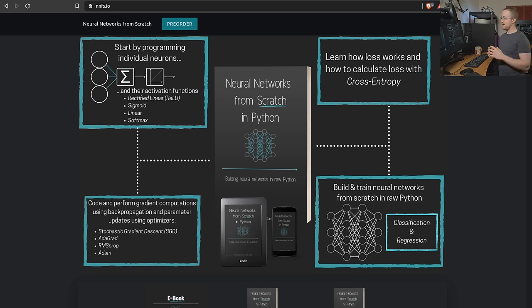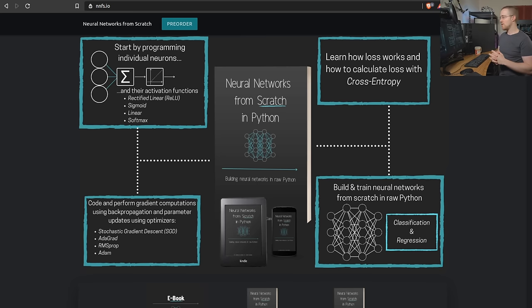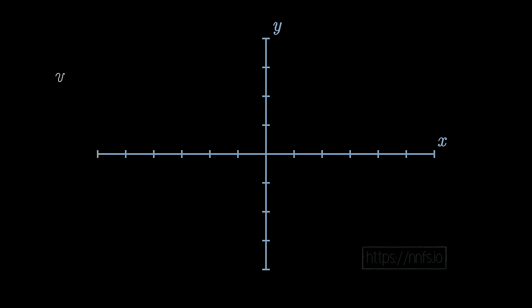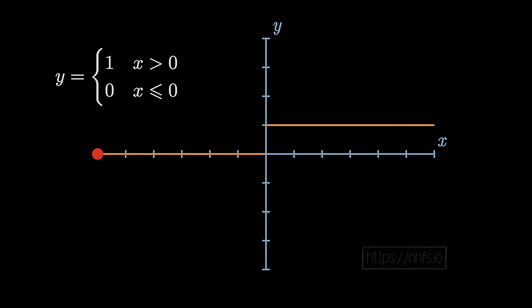First, let's cover an overview of what activation functions are, what they're doing, and why we use them. We'll start with the step function, otherwise known as the unit step function or the Heaviside function after Oliver Heaviside. A step function is very simple: if your input is greater than zero, the output will be 1; otherwise the output is 0.